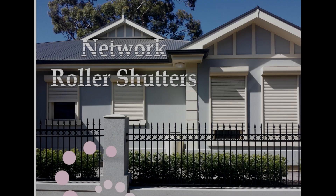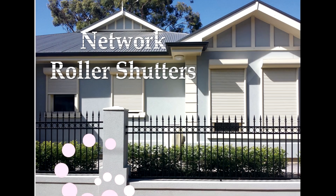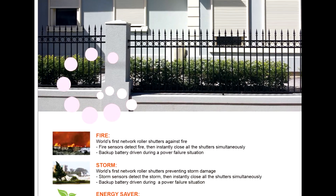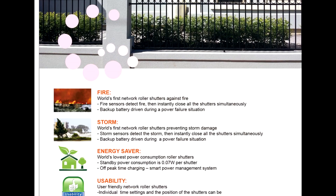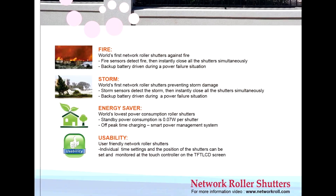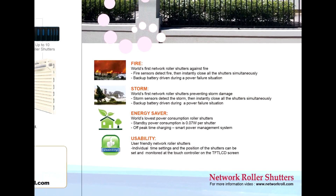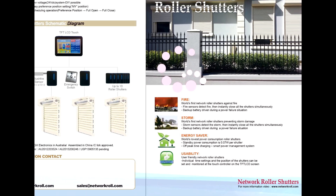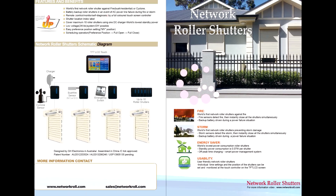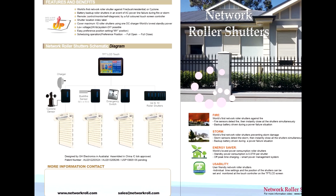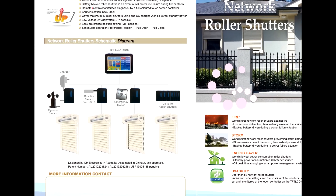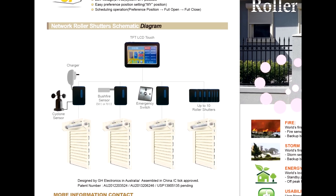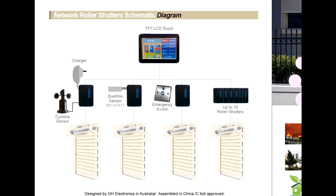Network roller shutters are the first in the world to automatically shut down all shutters when a fire or storm occurs and protect the house. It consumes the world's minimum 0.07W standby power consumption while always maintaining fast communication.